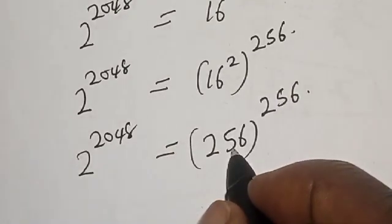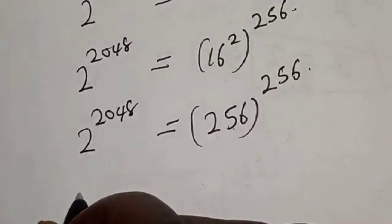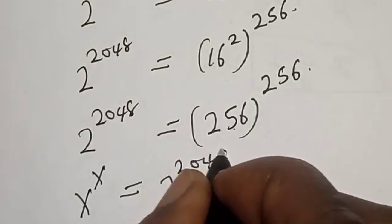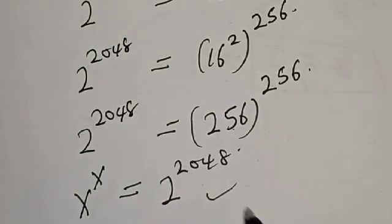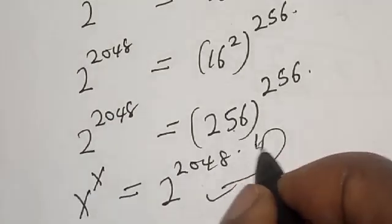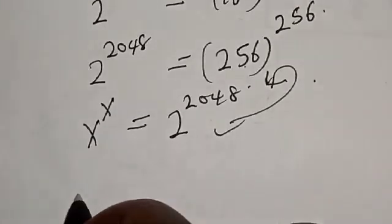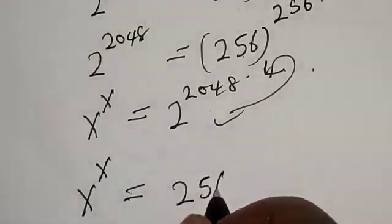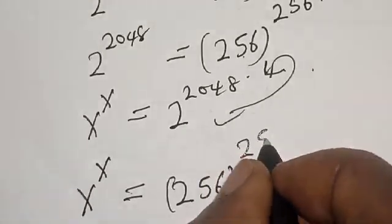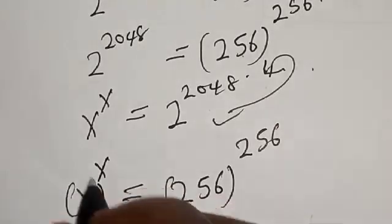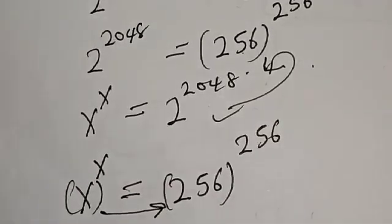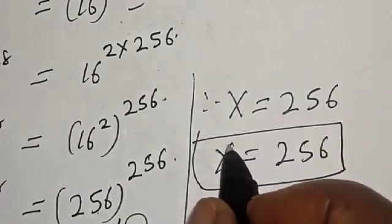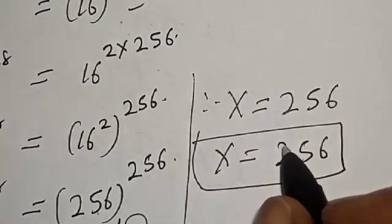Now we have 256 here and 256 here. Remember that s raised to power s is equal to 2 raised to power 2048. Substituting, we have s raised to power s is equal to 256 raised to power 256. By comparing, s is equal to 256. That is our final answer.